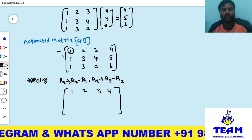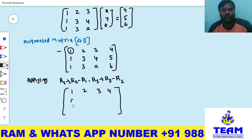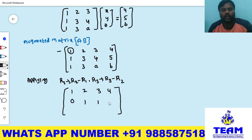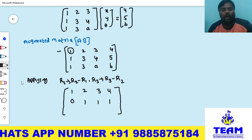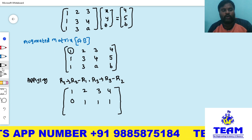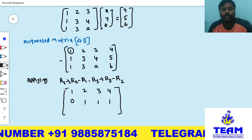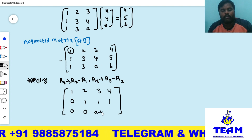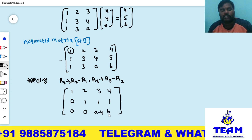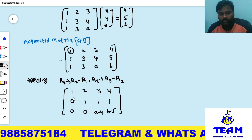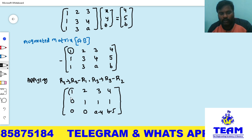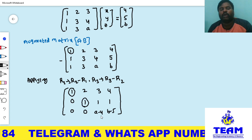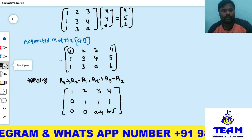Applying R2 − R1: 1−1=0, 3−2=1, 4−3=1, 5−4=1. So row 2 becomes 0, 1, 1 | 1. Applying R3 − R2: 1−1=0, 3−3=0, a−4, b−5. So row 3 becomes 0, 0, (a−4) | (b−5).